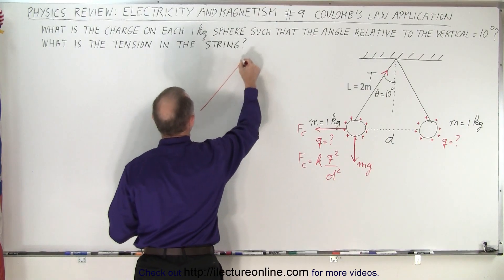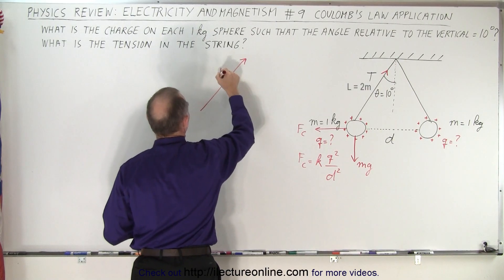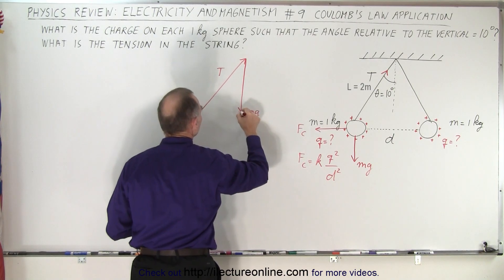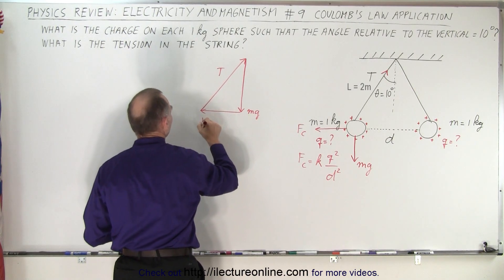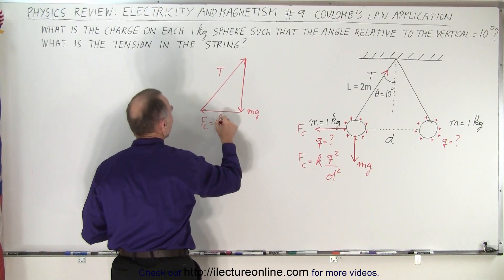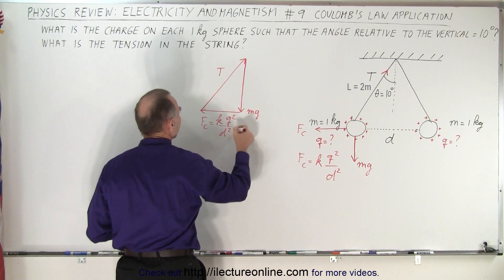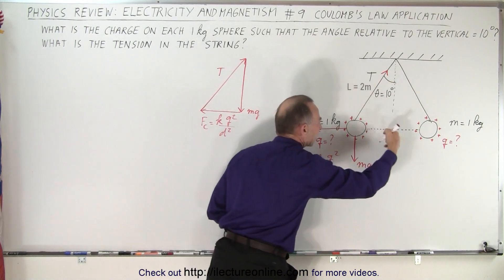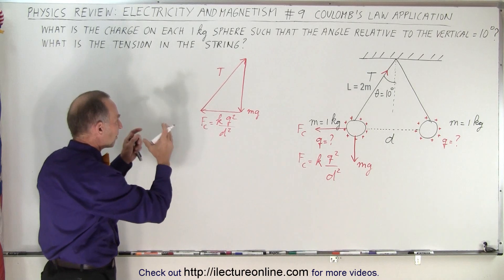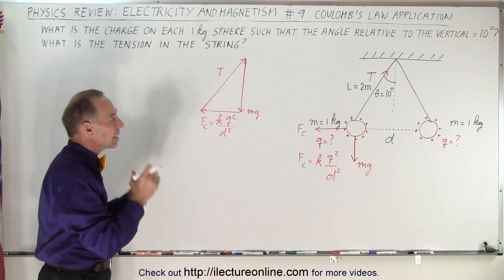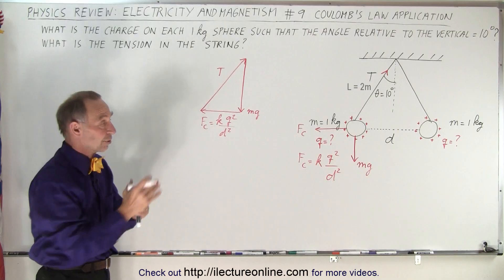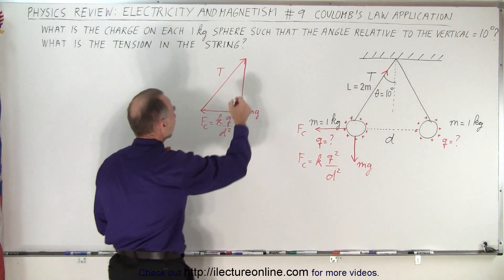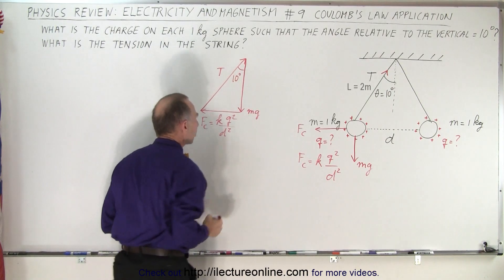So we see a tension in this direction. We see the force due to gravity mg in this direction. And we see the Coulomb force which is equal to KQ squared over D squared in this direction. So now we have a similar triangle and proportionally the magnitude of those three force vectors must be equal proportionally to the magnitude of the geometric lengths of that triangle. We then also realize that this angle must be 10 degrees.